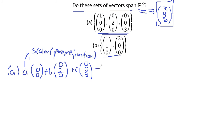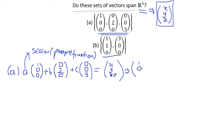We can write this in terms of an augmented matrix. A, B, and C are my parameterization constants, and we want to solve for X, Y, and Z. So we write the augmented matrix as: [1, 0, 0 | X; 0, 2, 0 | Y; 0, 0, 3 | Z].